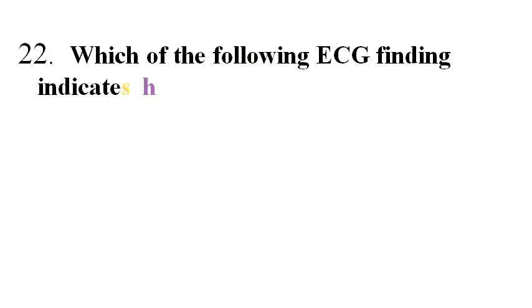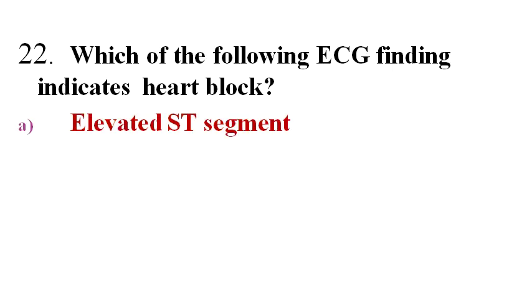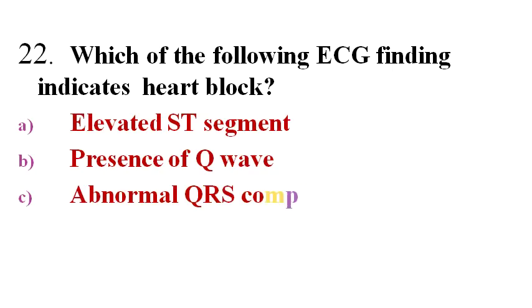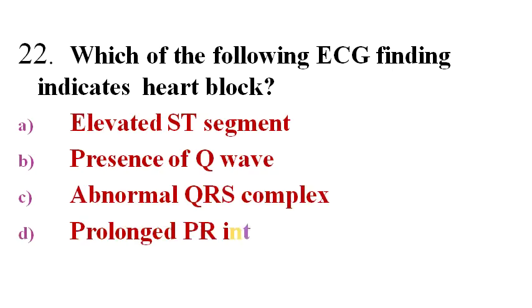Next question: Which of the following ECG findings indicates heart block? Options A. Elevated ST segment, B. Presence of Q wave, C. Abnormal QRS complex, D. Prolonged PR interval.